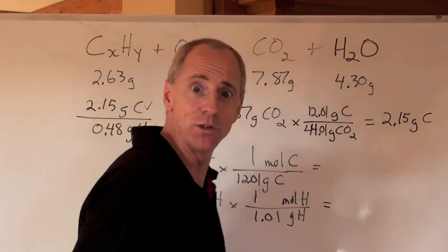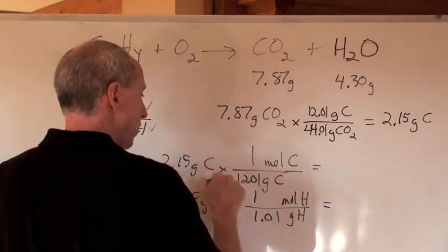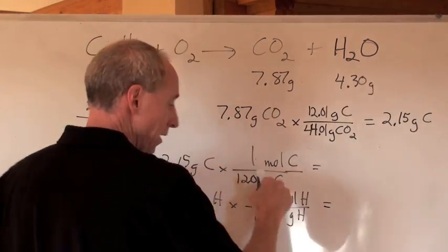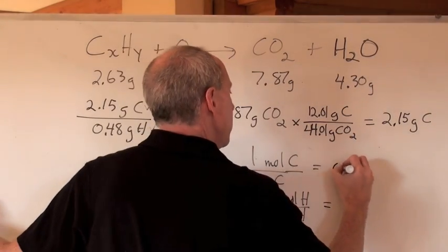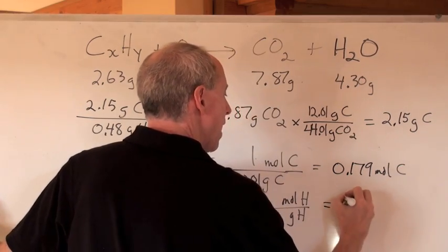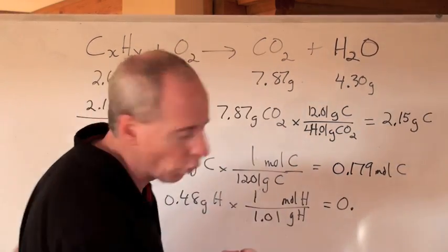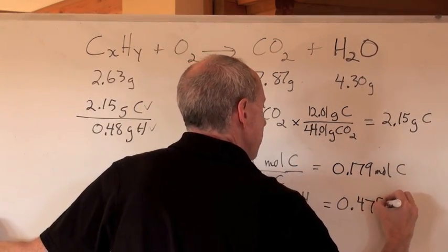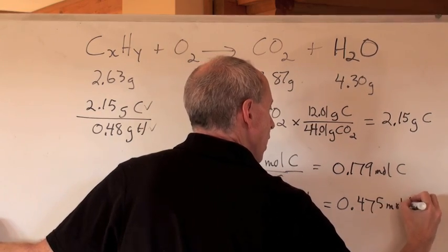And what are you going to get when you do that math right there? When you divide 2.15 by 12.01, you get 0.179 moles of carbon. And you get 0.475 moles of hydrogen.